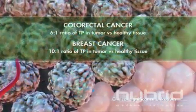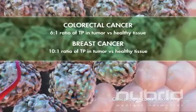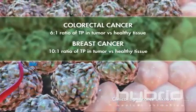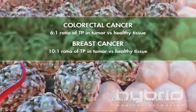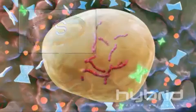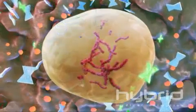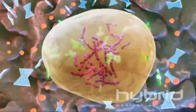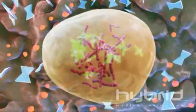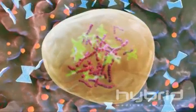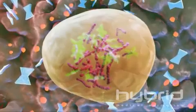Clinical studies have demonstrated that thymidine phosphorylase is overexpressed in a wide variety of solid tumors. Thymidylate synthase is most active during S-phase, when cells are synthesizing DNA in preparation for cell division. Xeloda inhibits DNA synthesis and is therefore most active against cells that are in S-phase. Cells which are not in S-phase are less susceptible to its effects.